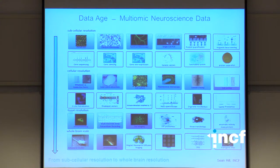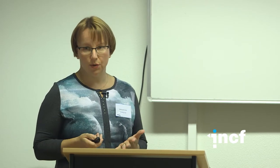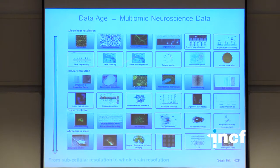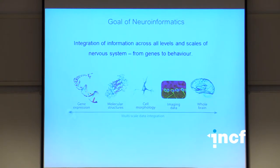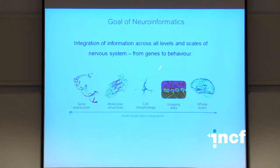At INCF we consider that the answer to making sense out of this complexity in the brain is neuroinformatics. Neuroinformatics is defined as the integration of information across all levels and scales of the nervous system, from genes to behavior. We want to start understanding not only the behavior or dynamics at one level, but to combine and understand across multiple scales. Neuroinformatics can be considered to be at the intersection between neuroscience and information science.